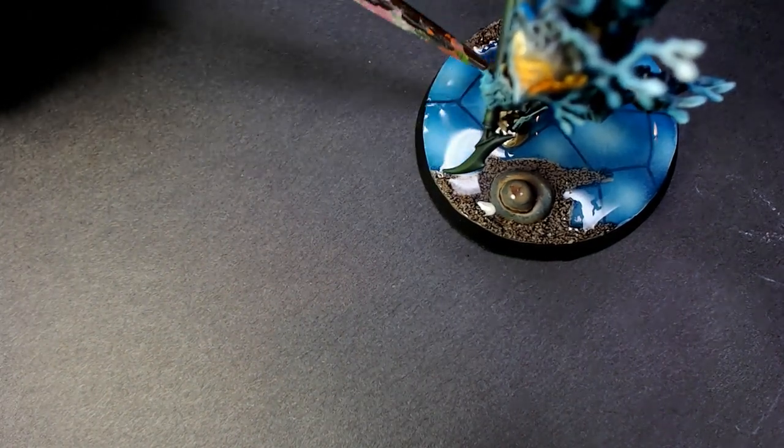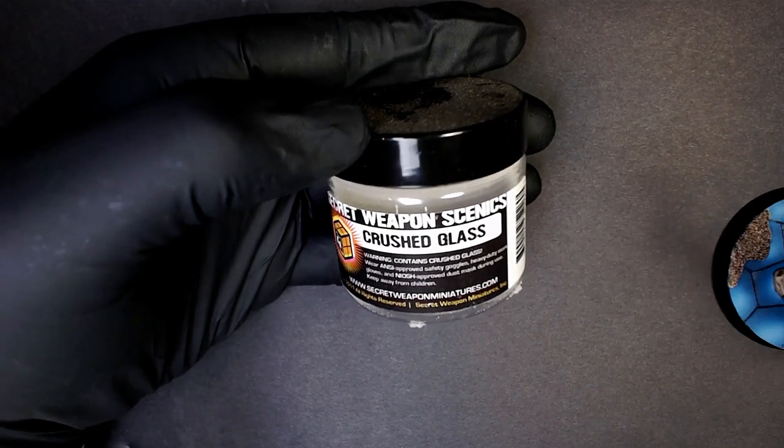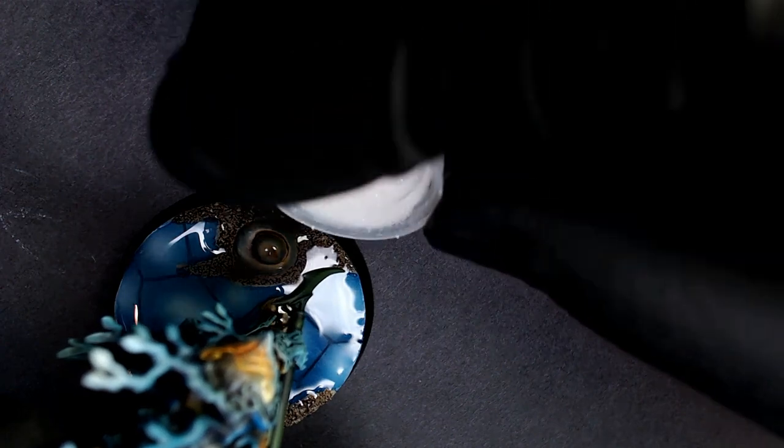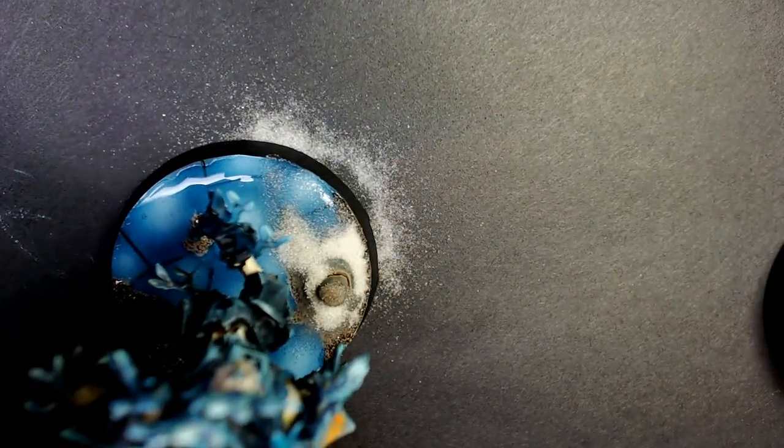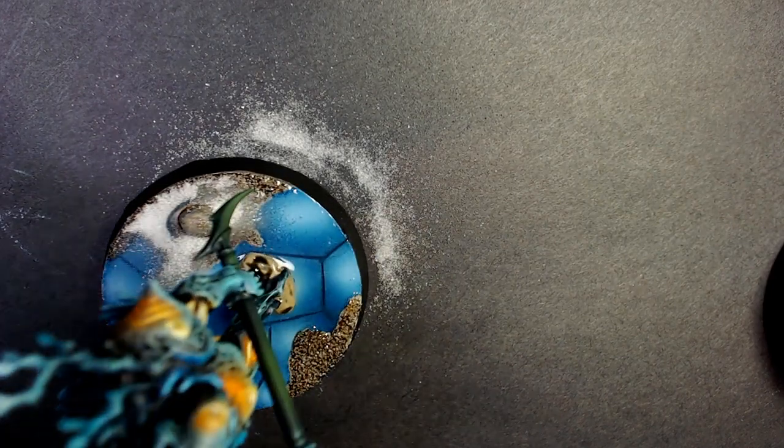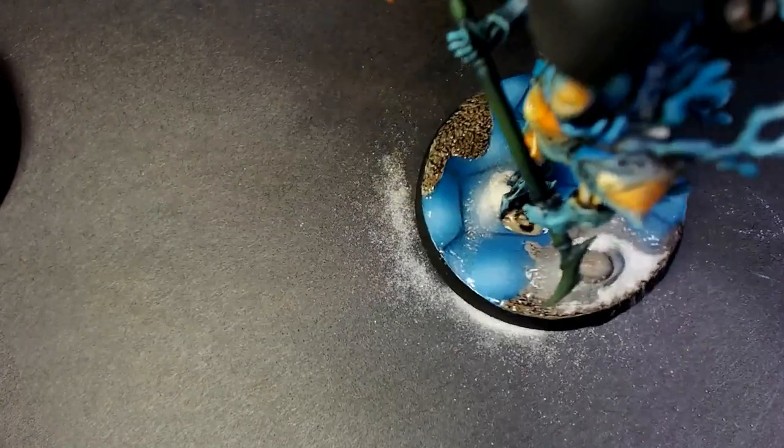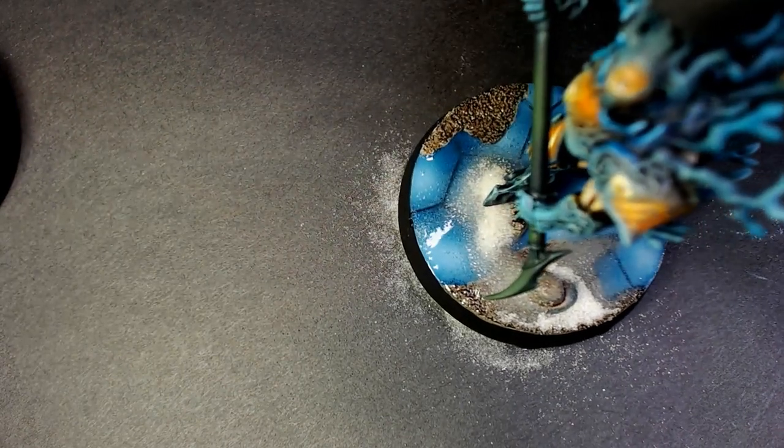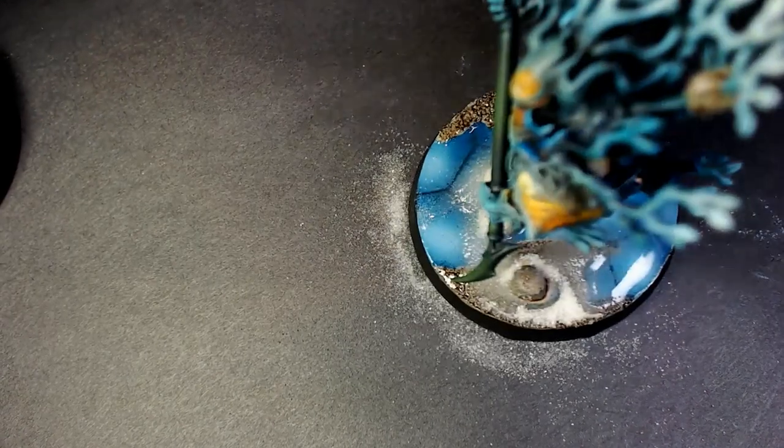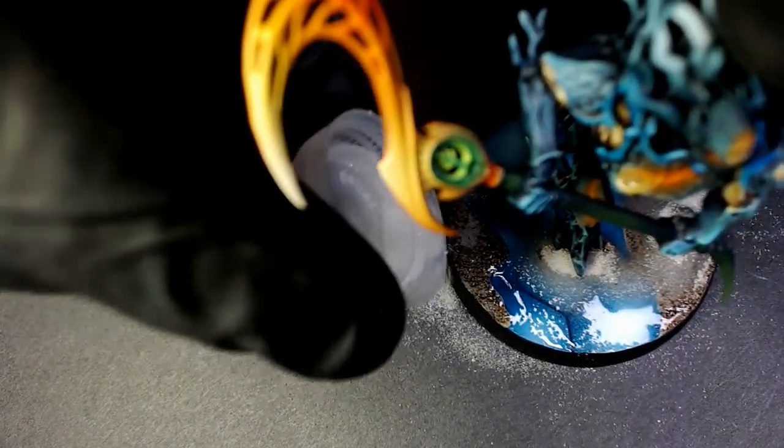I'm trying to build it up thick enough so there's actual distance between the top coat and the actual ice effect we painted on the resin. I want there to be translucency to it, like you're looking through the ice. I find the Secret Weapon realistic water does that the best. It also works in conjunction with the crushed glass. This is one of my favorite ways to do snow - pour it right into the liquid water effect.